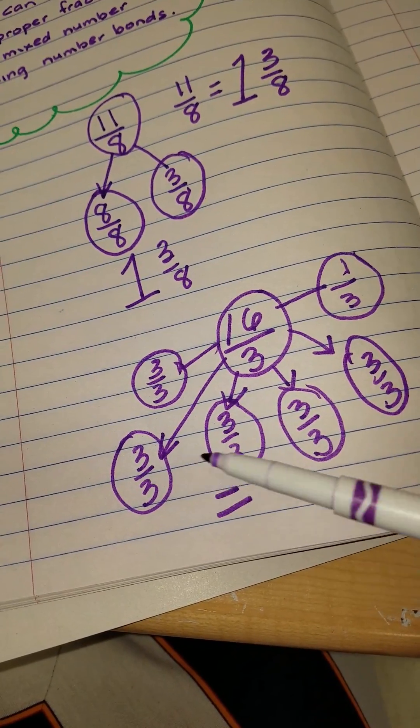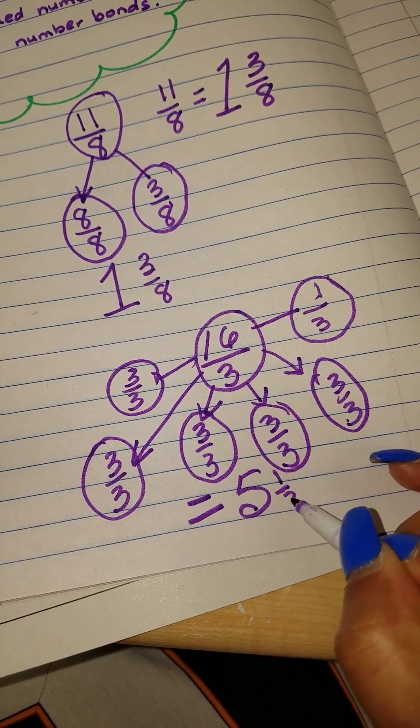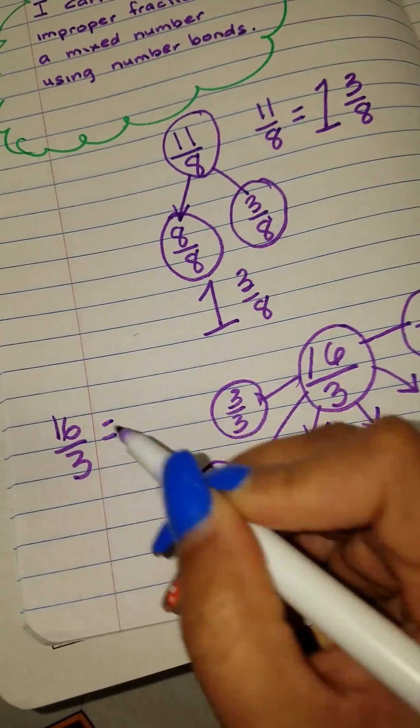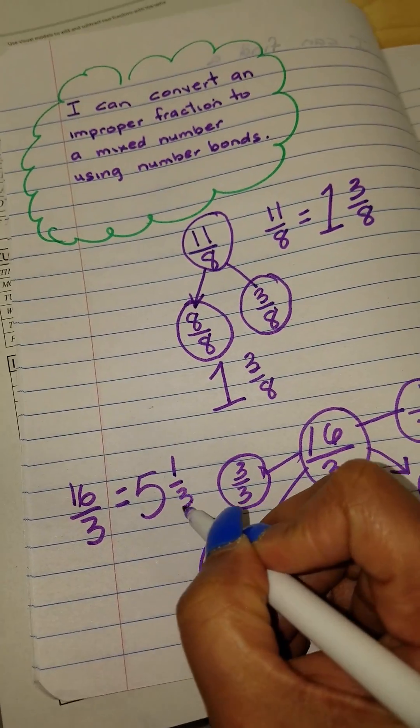We have 1, 2, 3, 4, 5 wholes, and our fraction being 1 third. Thus 16 thirds is equal to 5 wholes and 1 third.